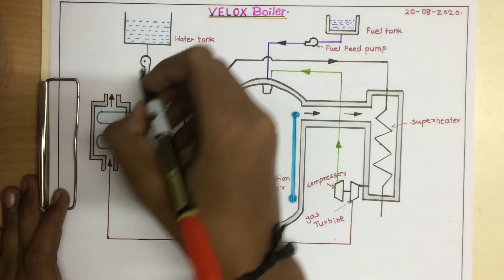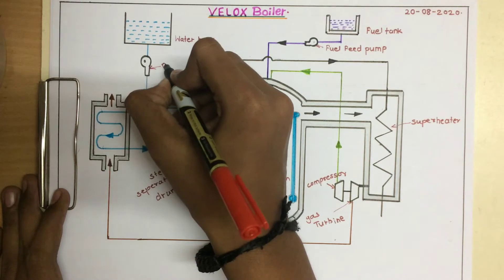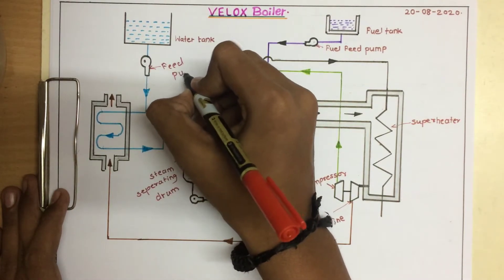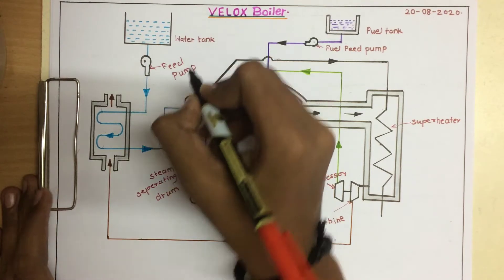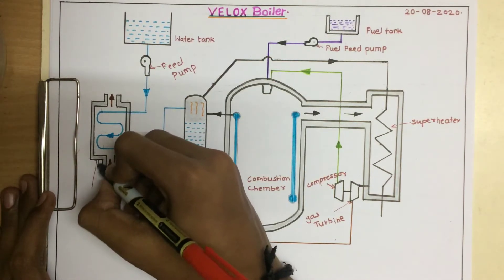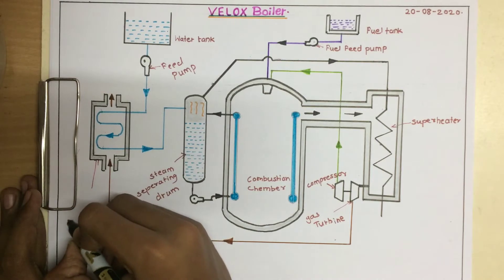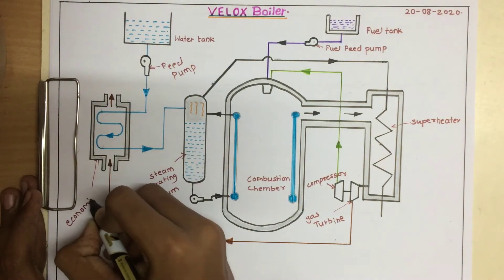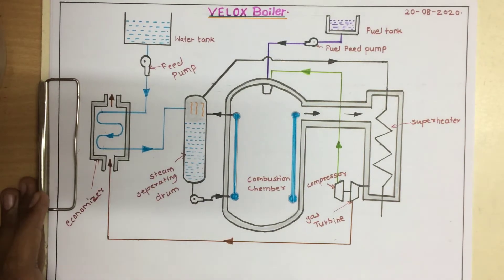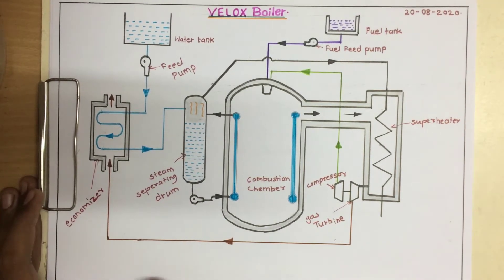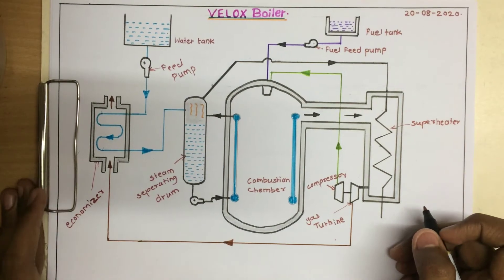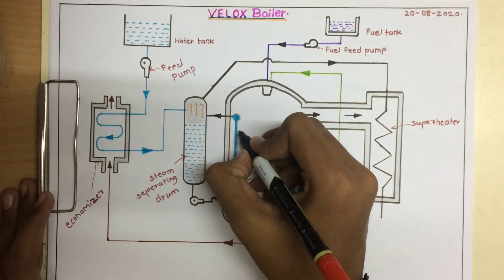Then there is a fuel pump, an economizer, and the water containing tubes.